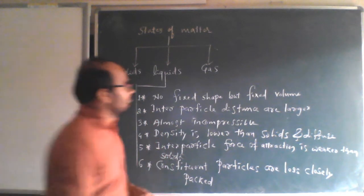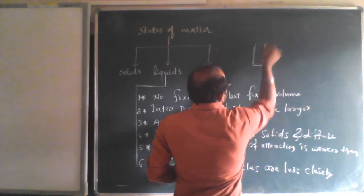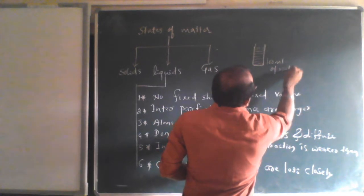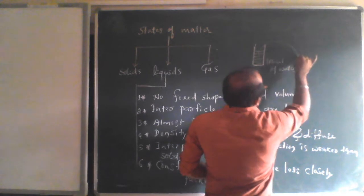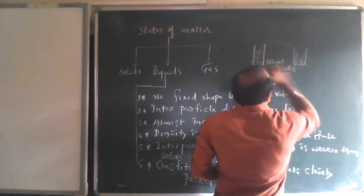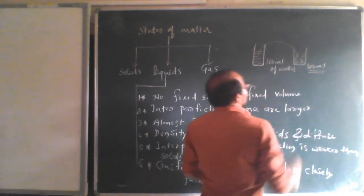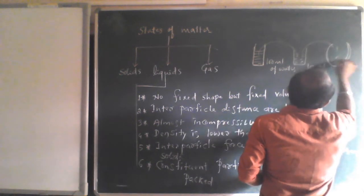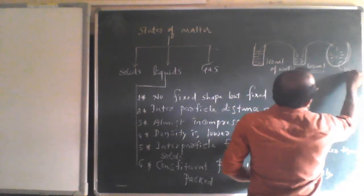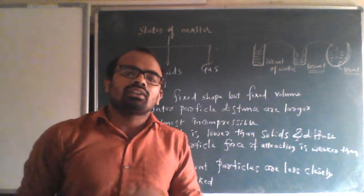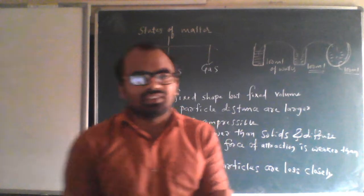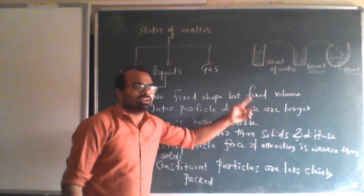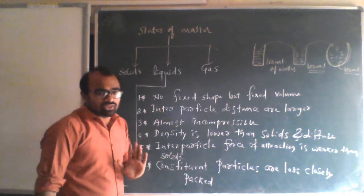Liquids have fixed volume. For example, if you take 100 ml of water in a glass and transfer it to another glass or a circular container, the water remains 100 ml. The volume does not change. So liquids have no fixed shape but they do have fixed volume.